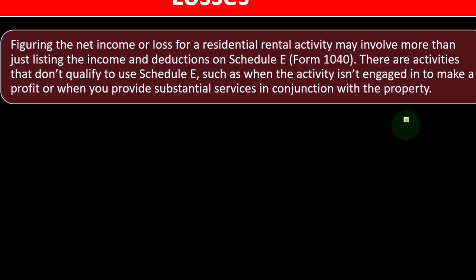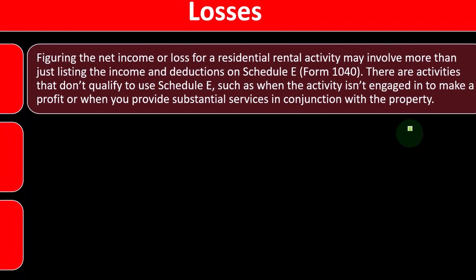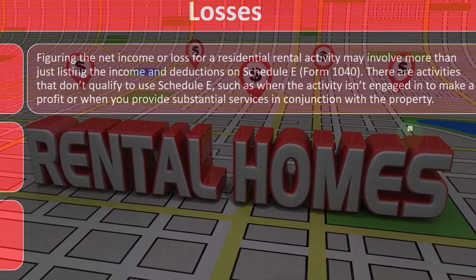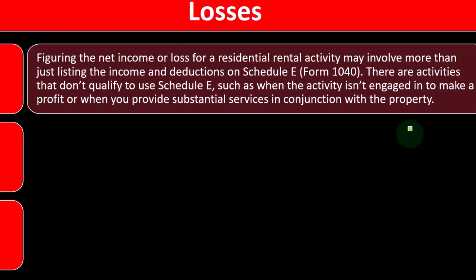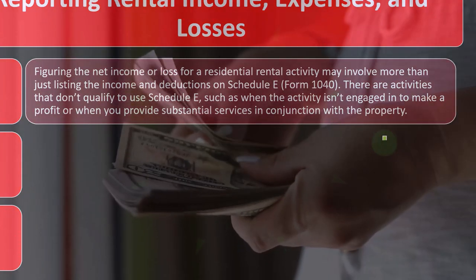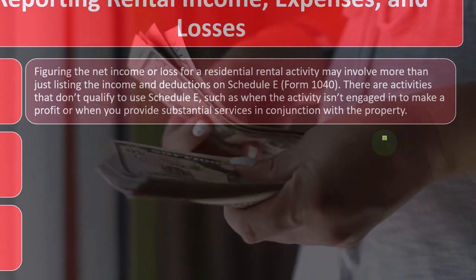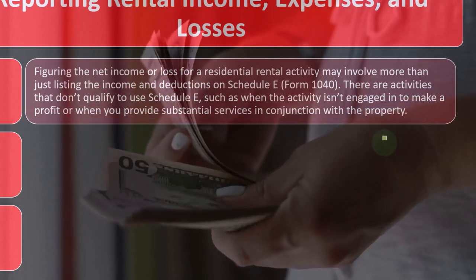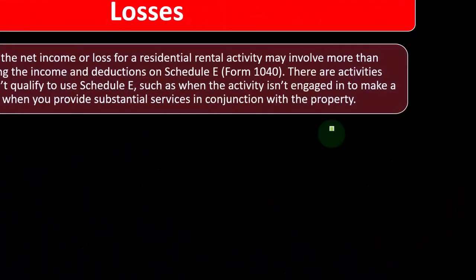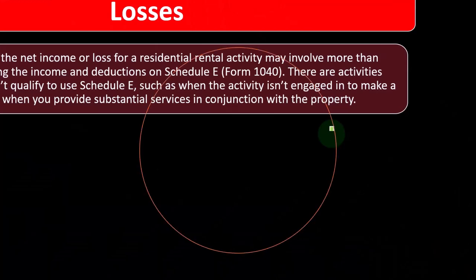Why wouldn't we just report rental income on the Schedule C, where we report sole proprietor and contractor businesses? One answer is that rental property has a whole different set of expense categories. But the primary reason is the concept of passive income — you're not actively involved with the property. It generates income similarly to investment income like dividends and interest. When you're actively working, as typically reported on Schedule C, you're also subject to Social Security and Medicare self-employment tax.